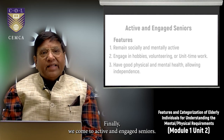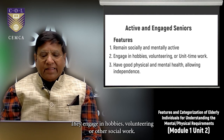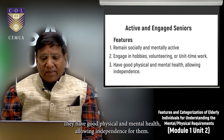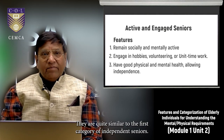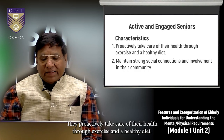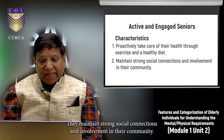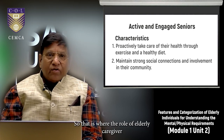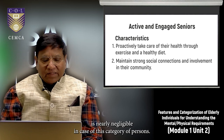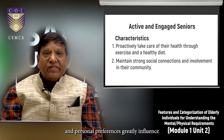The fifth category is active and engaged seniors — people who remain socially and mentally active, engage in hobbies, volunteering, or social work, and have good physical and mental health. They proactively take care of their health through exercise and a healthy diet and maintain strong social connections. The role of an elderly caregiver is nearly negligible for this category.